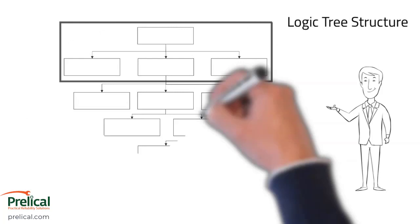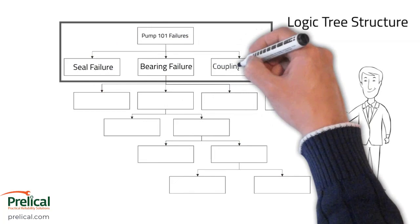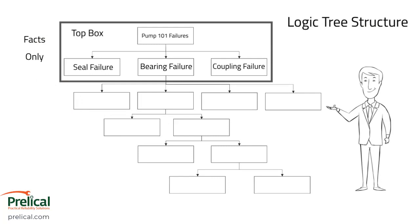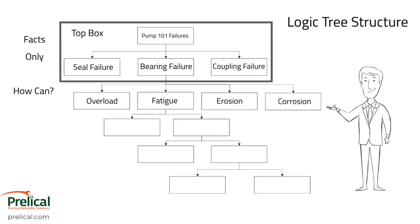Let's look at a practical example. Pump 101 has failed — it's a chronic event. Sometimes the seal fails, sometimes we have bearing failures, and once or twice we've had a coupling failure. Collectively, those are the facts that make up our top box for the pump failures we've been having.